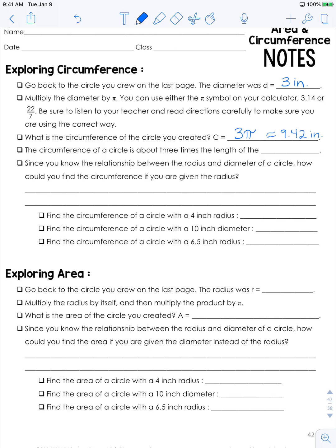So the circumference of a circle, if you look our diameter was 3 and our circumference is just over 9. So we can say that the circumference of a circle is about three times the length of the diameter. It will not be exactly but it is just about.